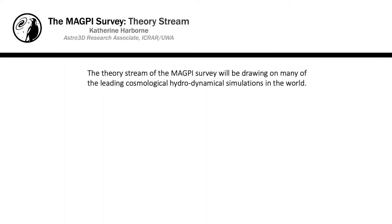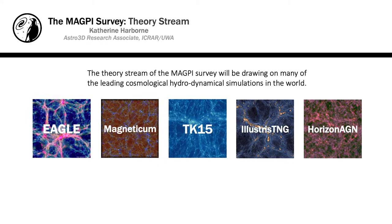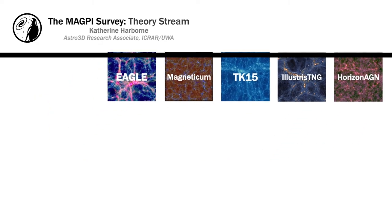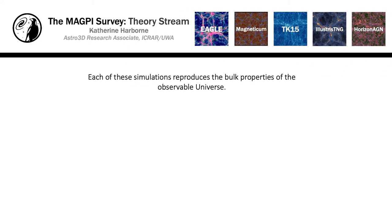Magpie also has an active theory component to the survey. We're working directly with several of the largest cosmological hydrodynamical simulations in the world, including Eagle, Magneticum, the Taylor and Kobayashi simulations, IllustrisTNG, and Horizon AGN.